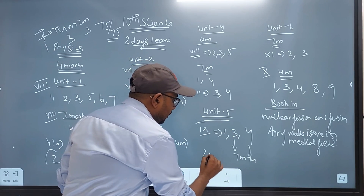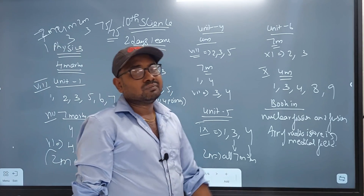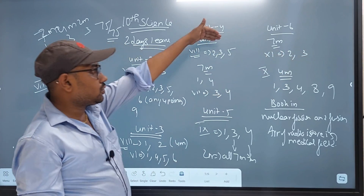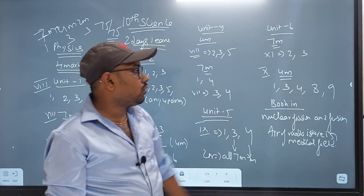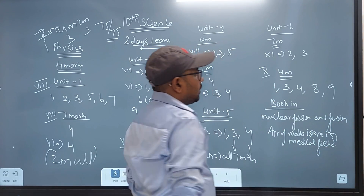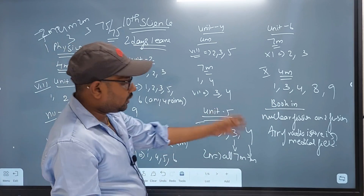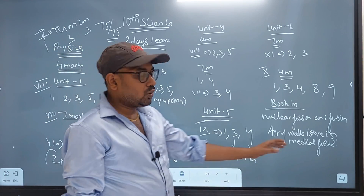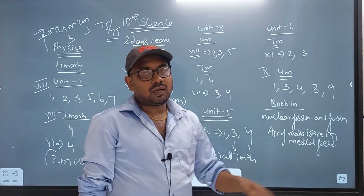In this lesson you will learn Doppler effect and longitudinal wave. In Unit 6, 7 mark is alpha, beta, gamma. Questions 2 and 3 cover nuclear reactor. Question 10, 4 mark is questions 1, 3, 4, 8, 9. If you have 2 marks, this is alpha, beta, gamma and nuclear reactor. This is 4 marks. This is nuclear fission and fusion, and application of radioactivity in the medical field.